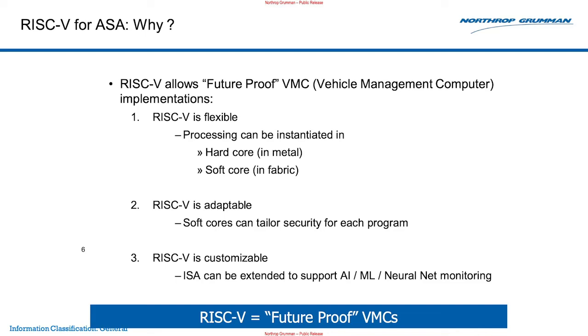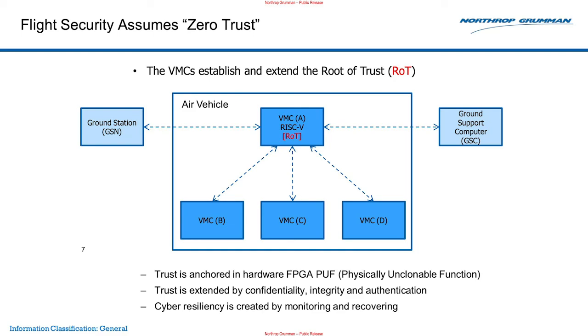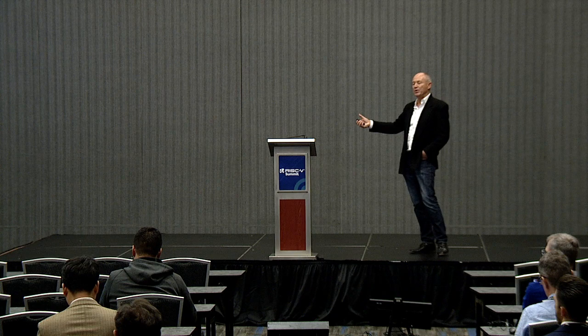Assuming zero trust means everything has to authenticate each other before anything happens. The air vehicle is shown in a quad-redundant configuration — four VMCs. The VMC is the root of trust, anchored in hardware in the FPGA in a PUF — the physically unclonable function. It takes advantage of the entropy when the masks are made for the chips, effectively creating a digital fingerprint for that chip unique to every chip. Each VMC will have its own unique identity.